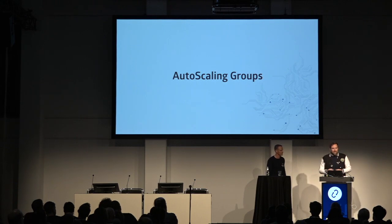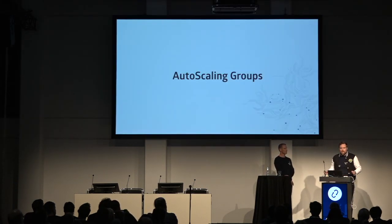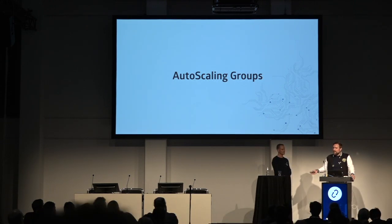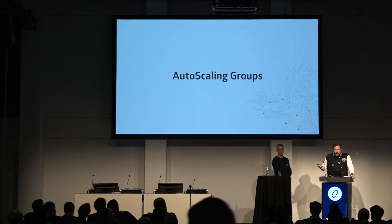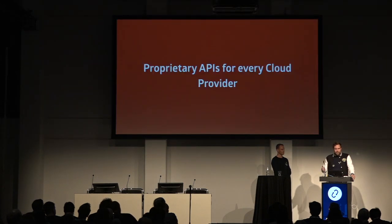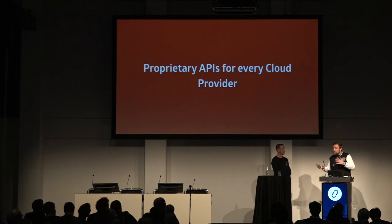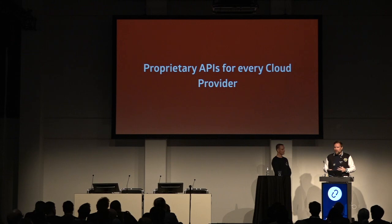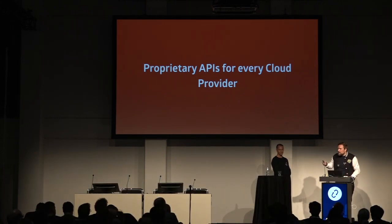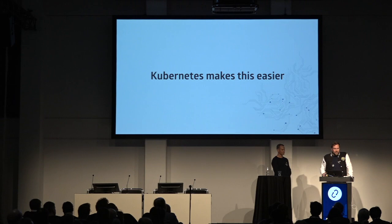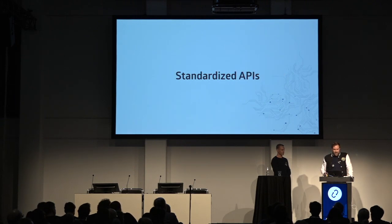Cloud providers do offer things called auto-scaling groups, which in theory can help by automatically booting up new VM images if the load increases. The problem is that a lot of these auto-scaling group APIs are very proprietary — they are different for every cloud provider. If you are on AWS and you want to move to OpenStack, you have to implement that again and again. Kubernetes makes this a lot easier by standardizing the APIs for that.